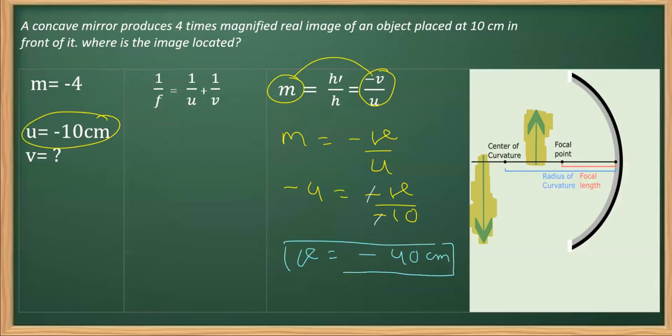So the image will be formed at a distance of 40 centimeter in front of the mirror. As you can see here, the image so formed is in front of the mirror, and that's why it is necessary to mention that the image formed is at a distance of 40 centimeter in front of the mirror.